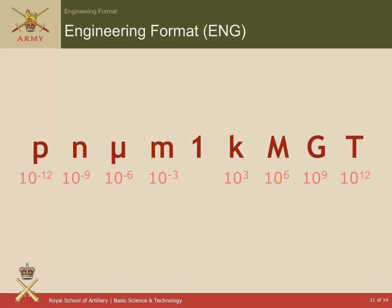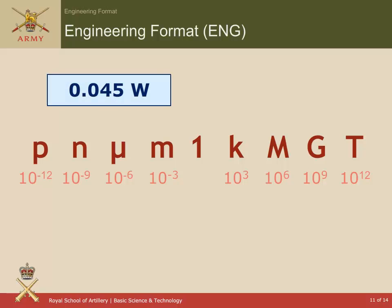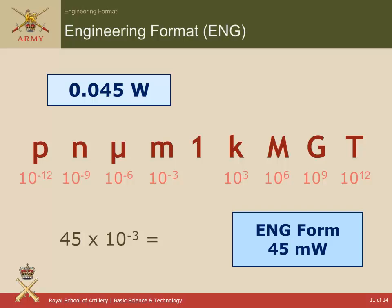If we look at smaller numbers — 0.045 of a watt — we want to express that as a number between 1 and 999. We're going to have to move the decimal point, and we do that by multiplying by 1,000, so we end up with 45. To compensate for that, it's 45 milliwatts. You could just look at 0.045 and see you've got a 5 in the thousandths column, so express that as 45 times 10 to the power of minus 3 — 45 milliwatts.